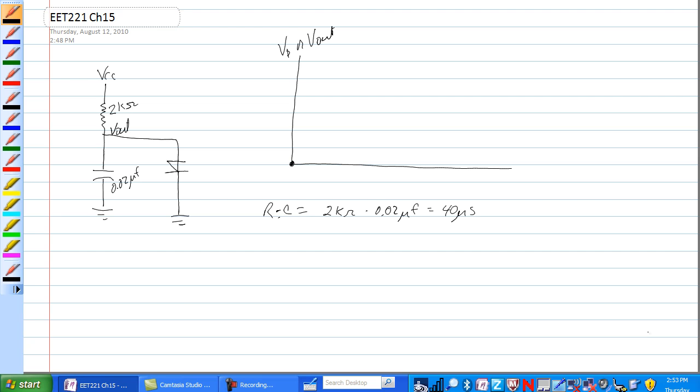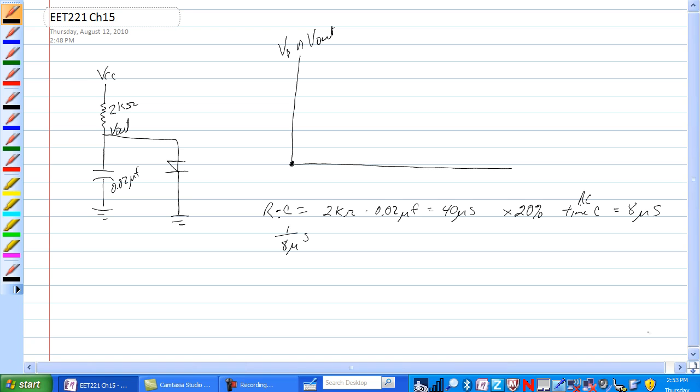Now, they're asking you in the question example 15.3 if the sawtooth wave is a period of approximately 20% of the time constant. So times 20% of the time constant of the RC time constant is equal to 8 microseconds. And 1 over 8 microseconds is equal to 125 kilohertz.